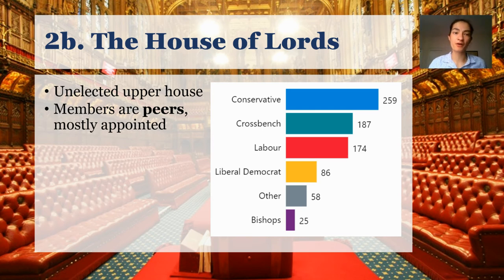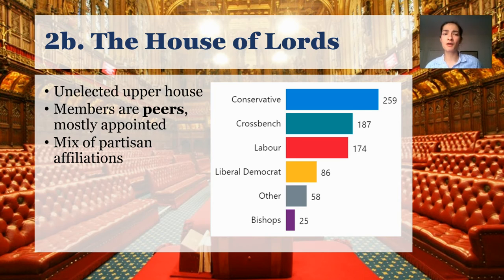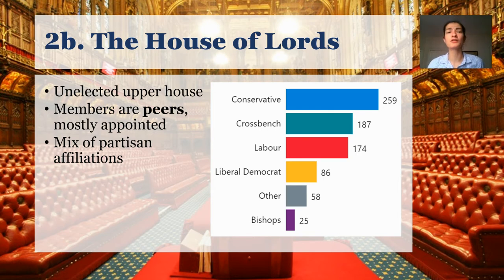Their titles are not hereditary and they're appointed on the advice of the prime minister, who will often also consider nominations from leadership in the opposition party. The House of Lords has a mix of partisan affiliations. As you can see in this graph, the plurality of its members are Conservative. But the second biggest group as of this recording is actually what's known as crossbench peers — peers who have no particular political party affiliation. There is not a partisan majority in the House of Lords, and the principle is that this can be a repository of expertise, allowing people to think with fewer partisan intentions about how to legislate best for the country.